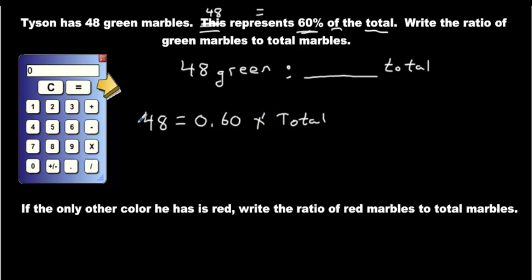Now all we have to do is we just divide these two, right? So we have now 48 divided by decimal 60, divided by 0.60, equals 80 marbles.